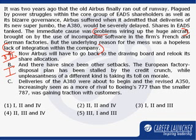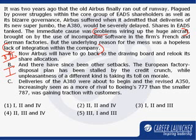Statement C: The deliveries of the A380 were about to begin and the revised A350, increasingly seen as more of a rival, was gaining traction with customers. This seems to be speaking positively about the product, which goes against what has been spoken about in the paragraph. The paragraph says the Super Jumbo would be severely delayed and many negative things were happening, whereas statement C is very positive. Positive tone going against the negative tone — hence type 2.